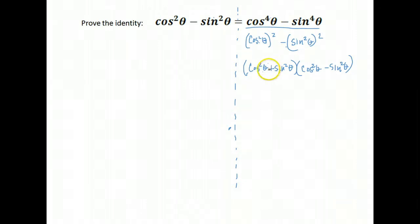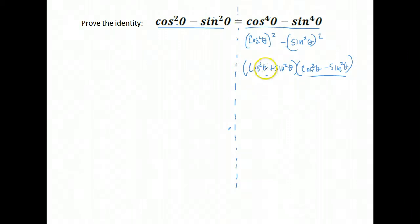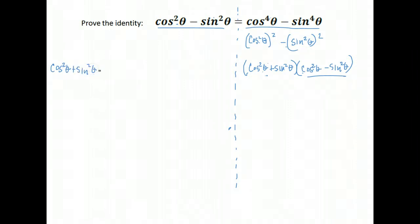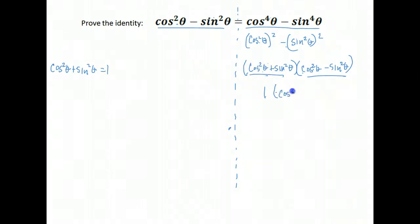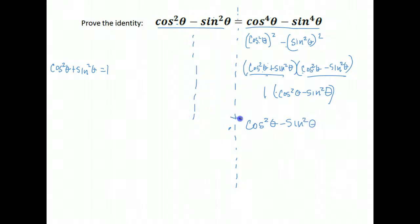Now we look for identities. Notice our left hand side looks almost like our right hand side — we do have cosine squared minus sine squared right here, but we have this extra piece. Look at your identity sheet and see if there's anything about cosine squared plus sine squared. There is an identity that says cosine squared plus sine squared equals 1. That means we have 1 times cosine squared theta minus sine squared theta, which is just cosine squared theta minus sine squared theta. Now our left side looks exactly like our right side.